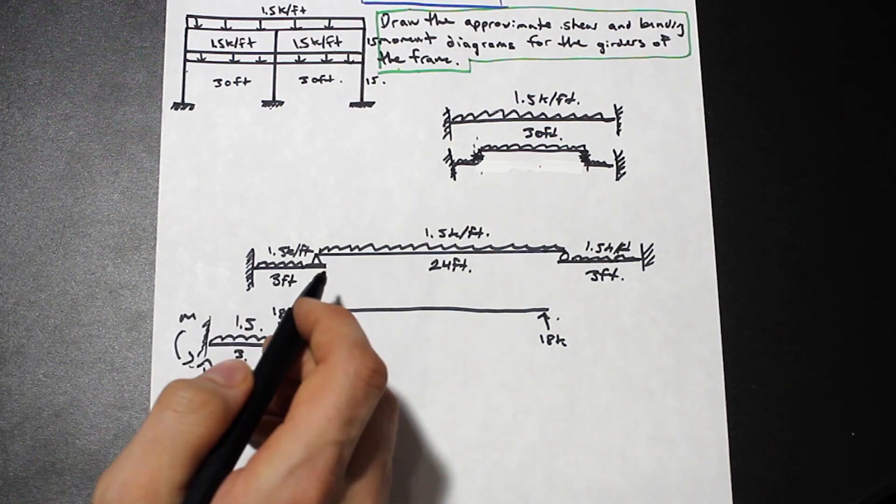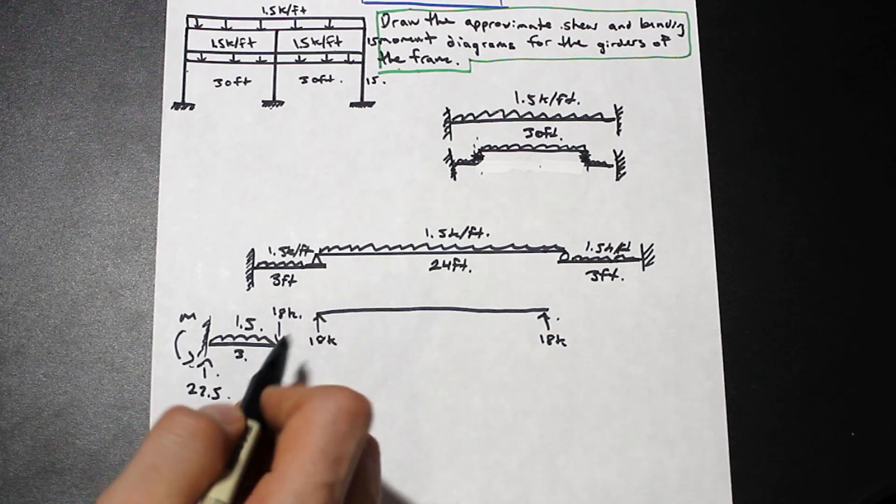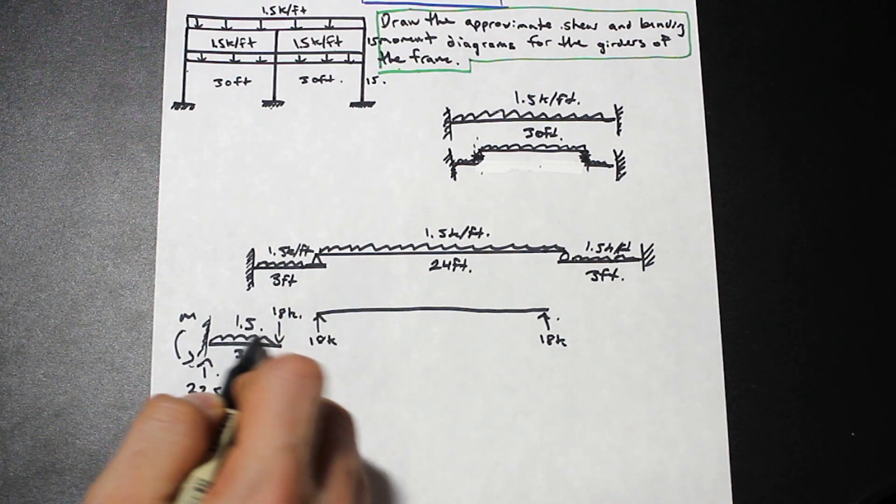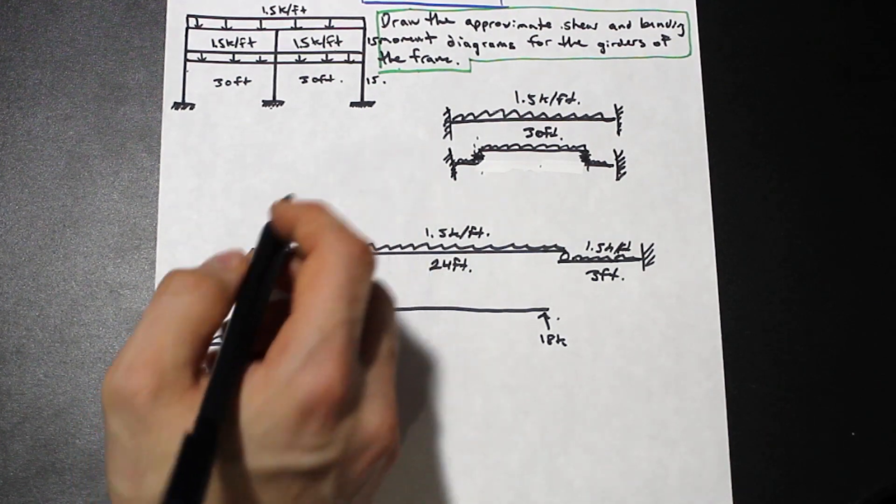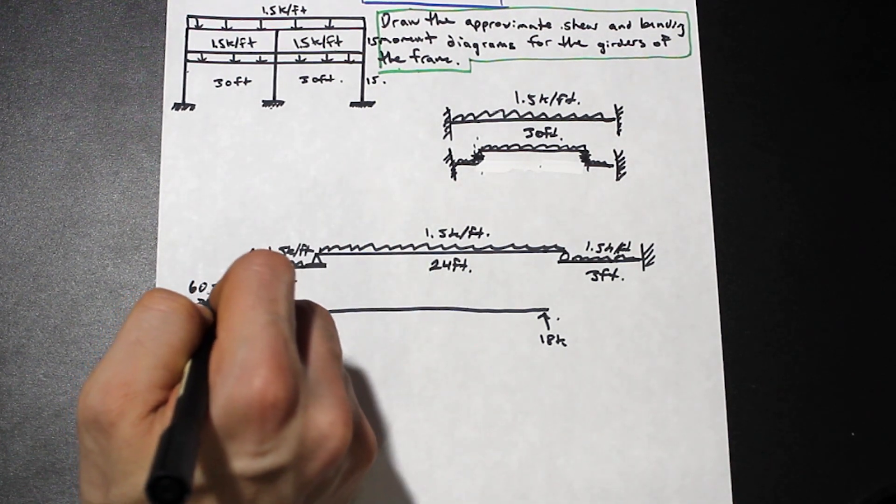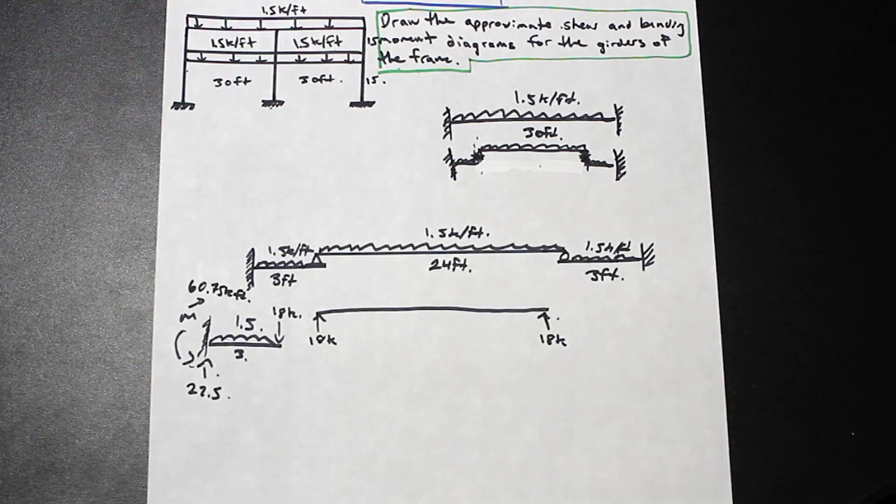The moment is simply going to be 18 kip times 3, right, plus 1.5 times 3 times 1.5. So m here is simply going to be 60.75 kip foot. And it's exactly the same on the other side.